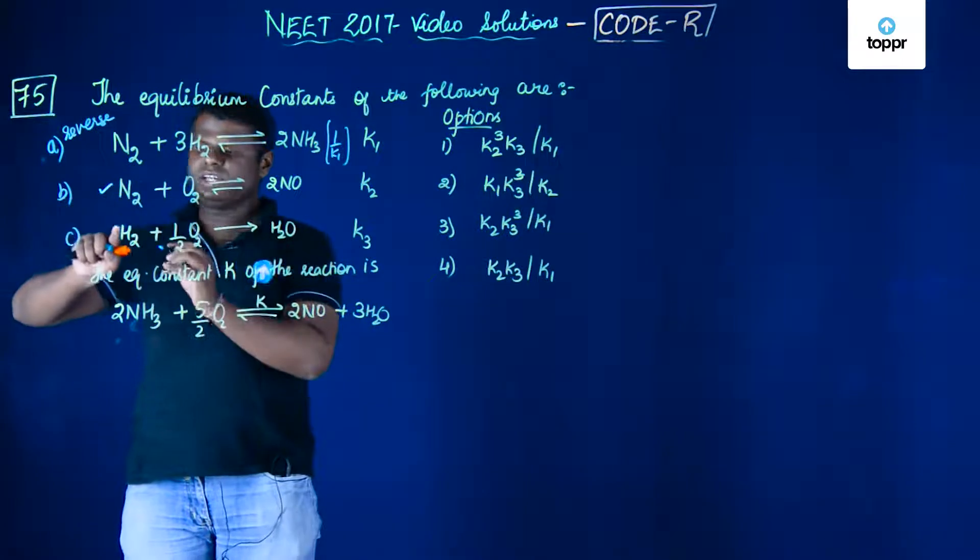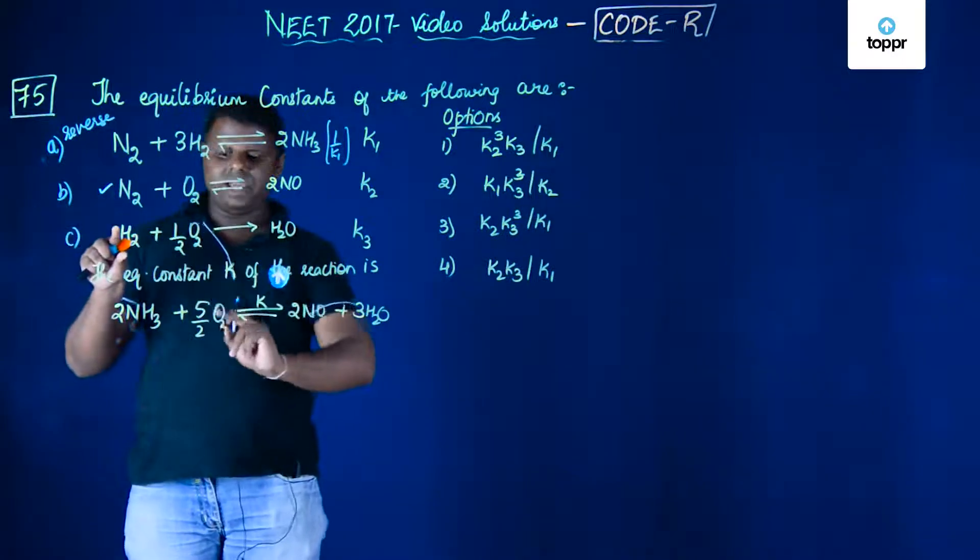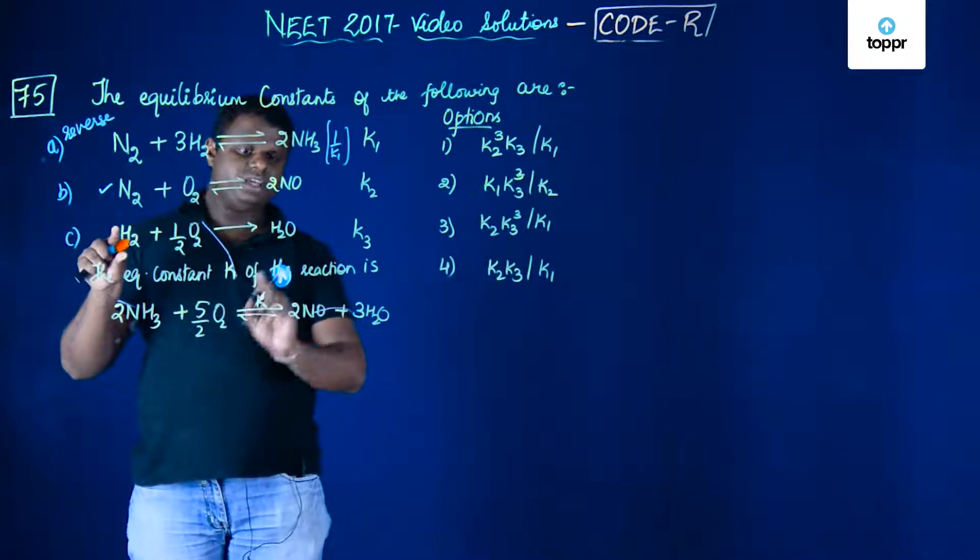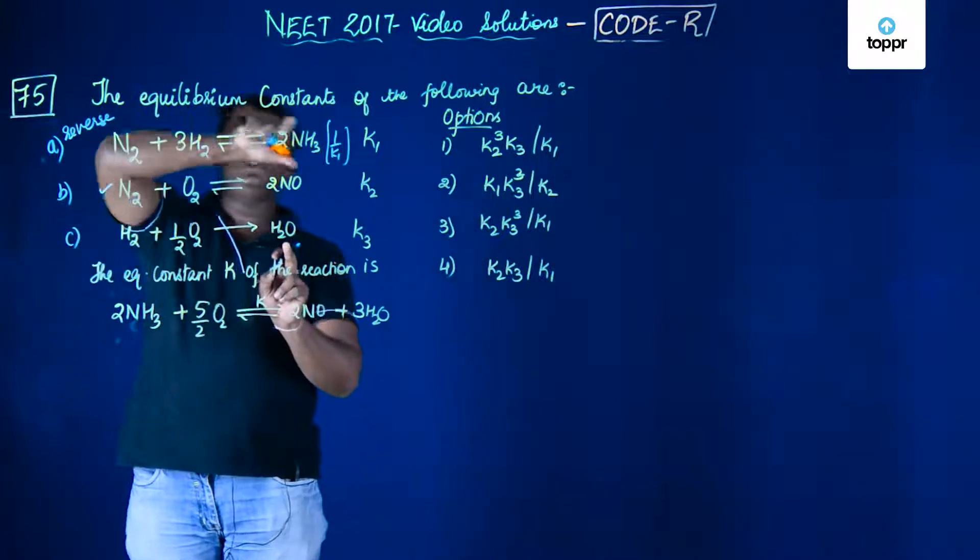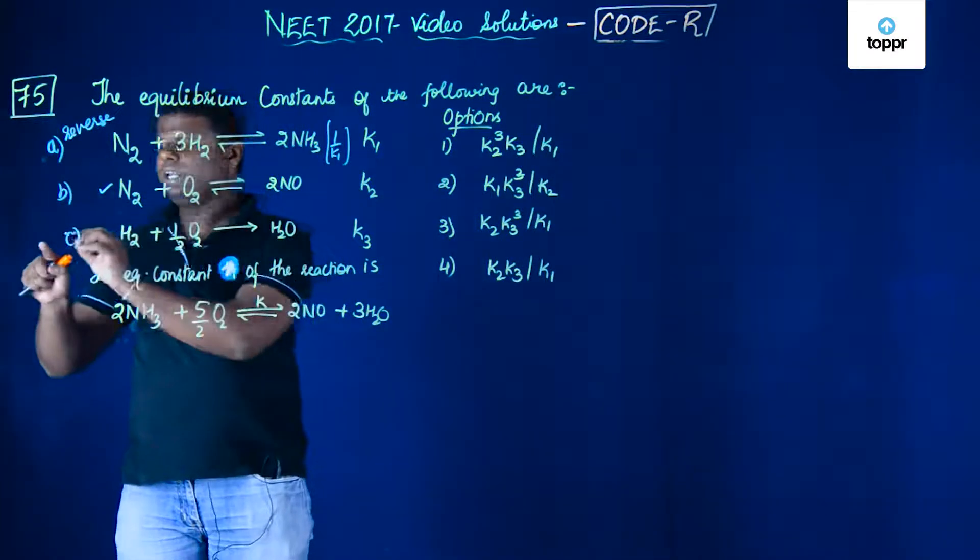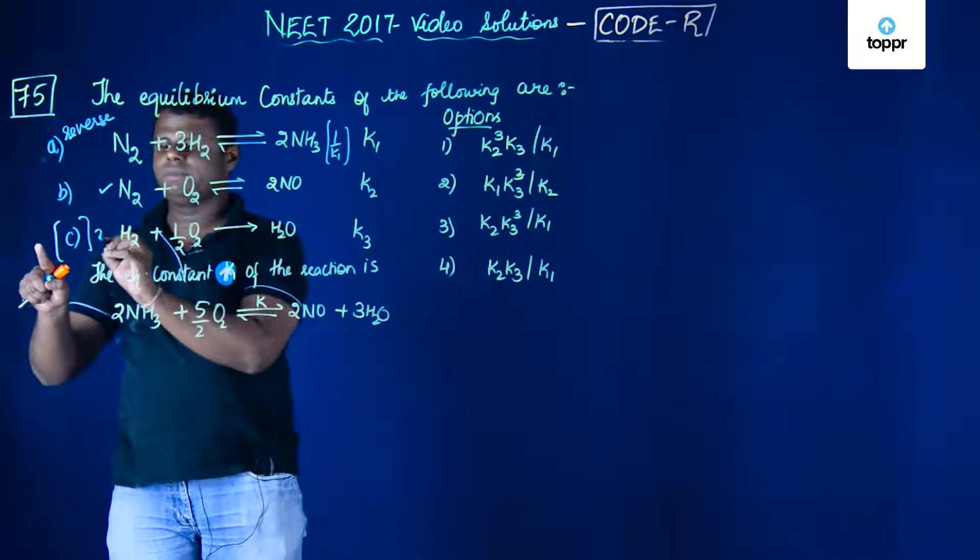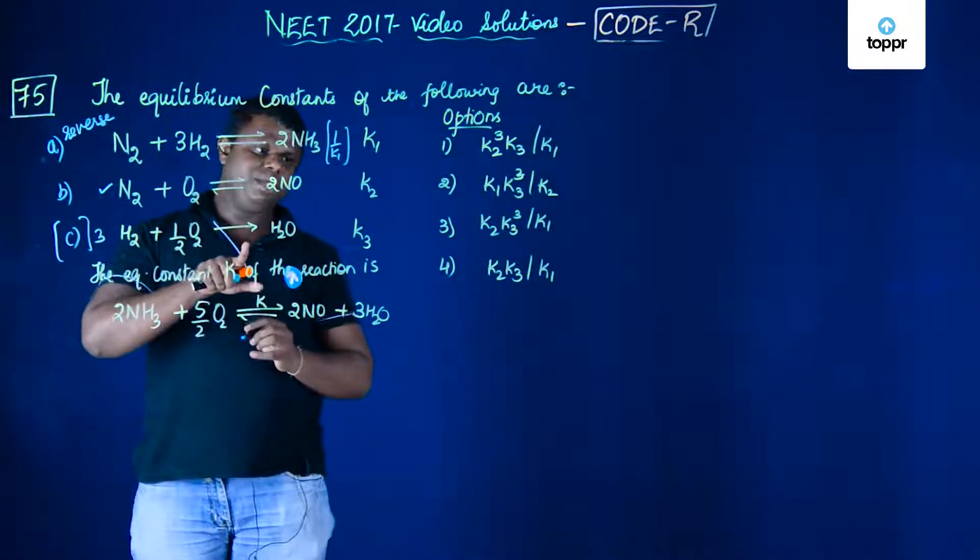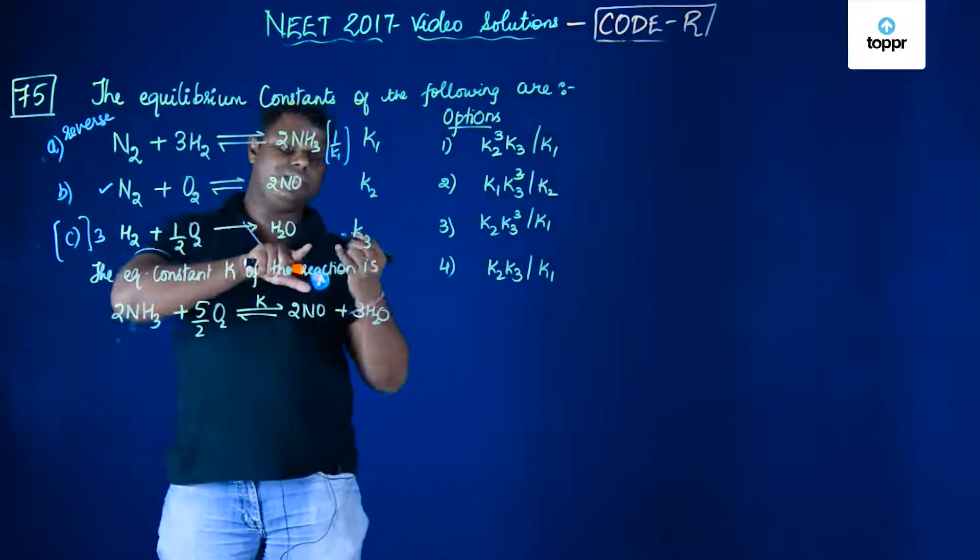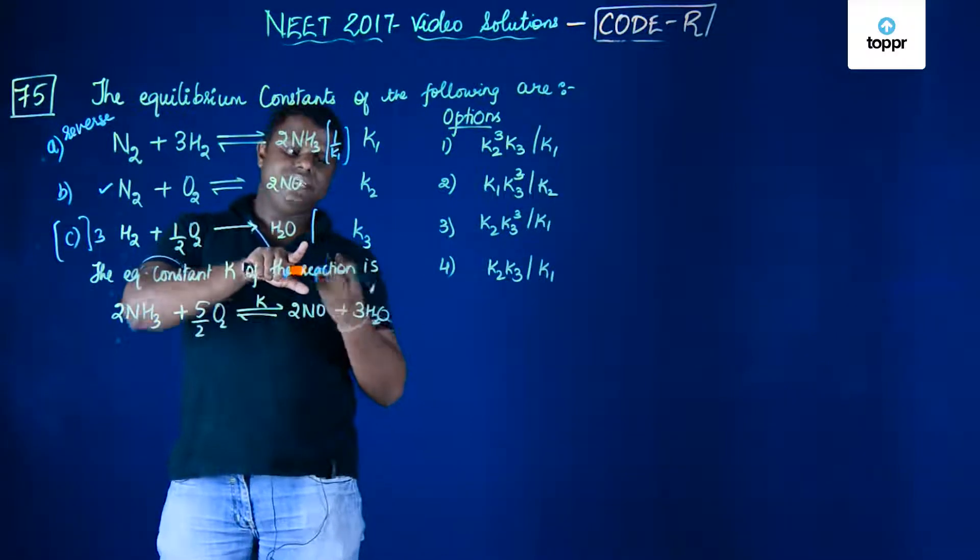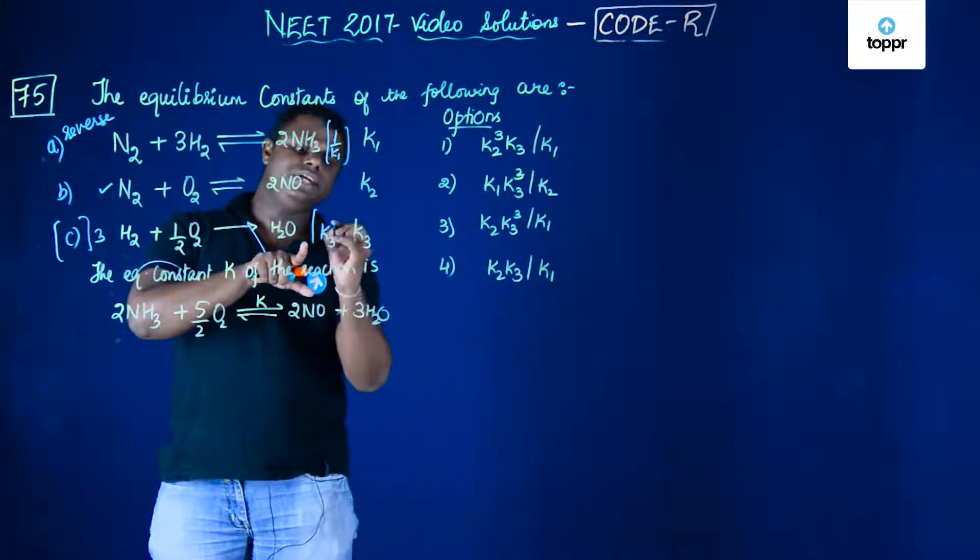You have to make this 5/2 O2, and there is 3 moles of H2O which is not appearing anywhere. So what I would do is multiply equation C by 3. When I multiply this equation by 3, the equilibrium constant would definitely become k3 cube.